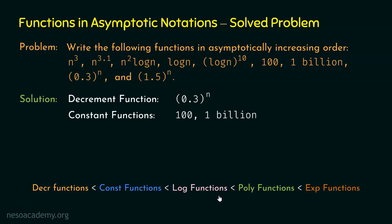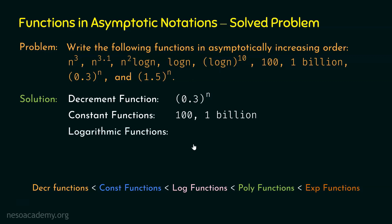For logarithmic functions, we have log n and log n to the power 10. Note that n² log n is not a logarithmic function — it has a multiplication with polynomial n², which is the dominating term, so its growth rate depends on n², not log n. Therefore, the logarithmic functions are log n and log n to the power 10.